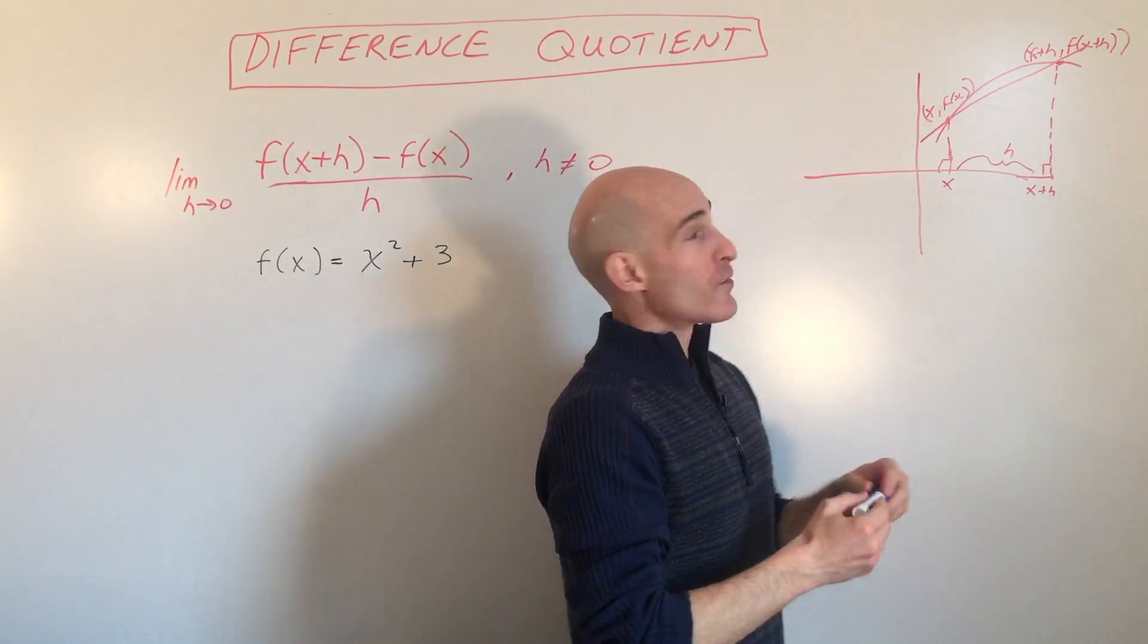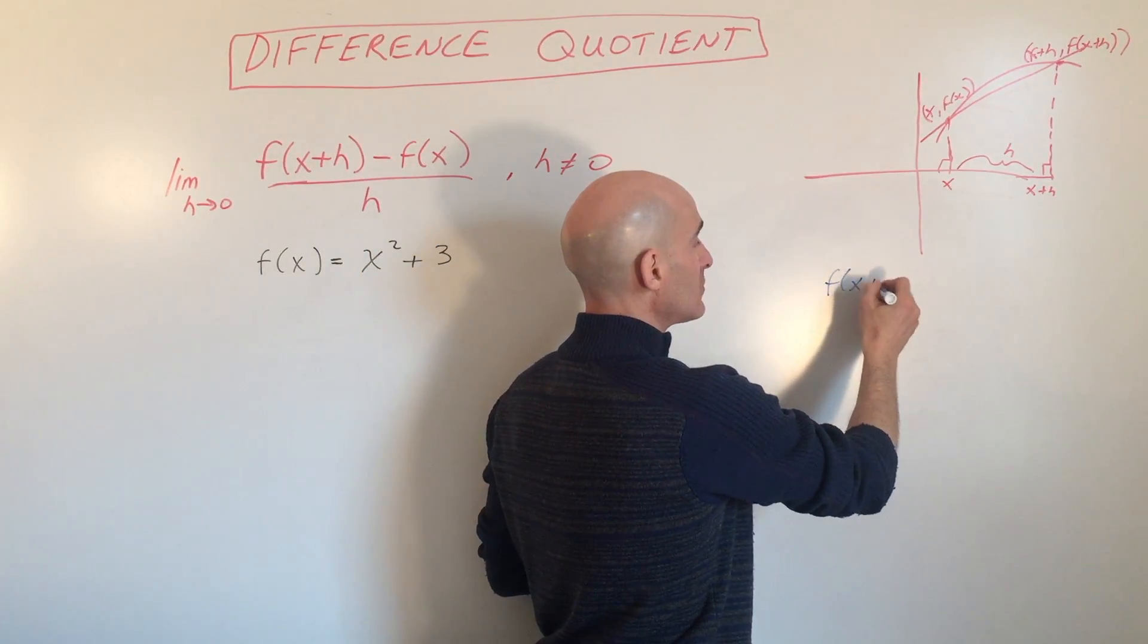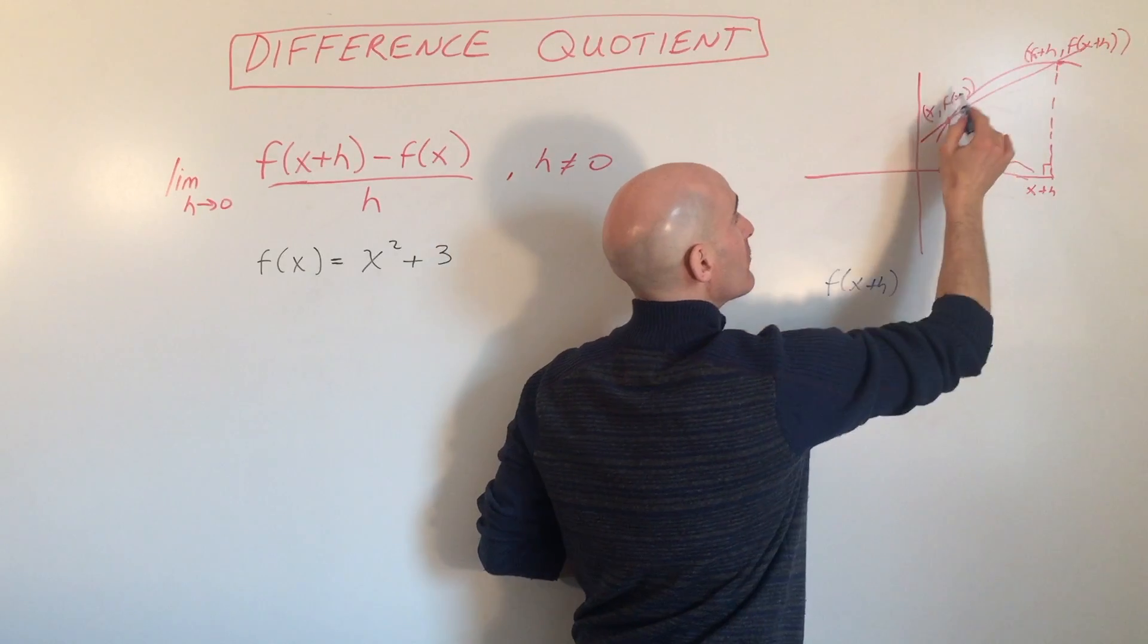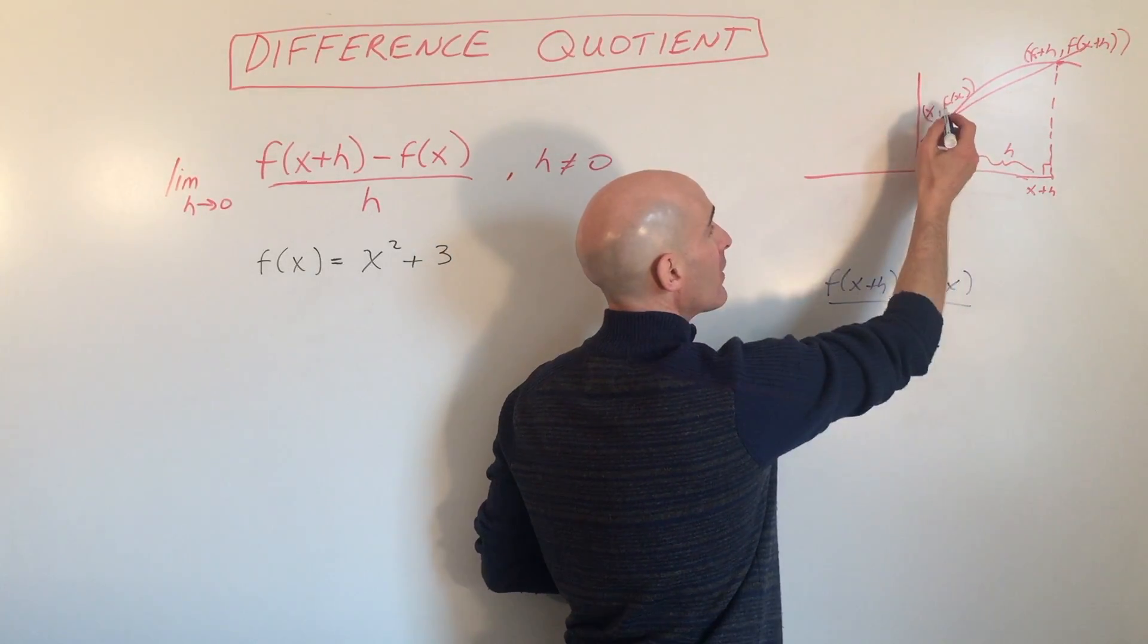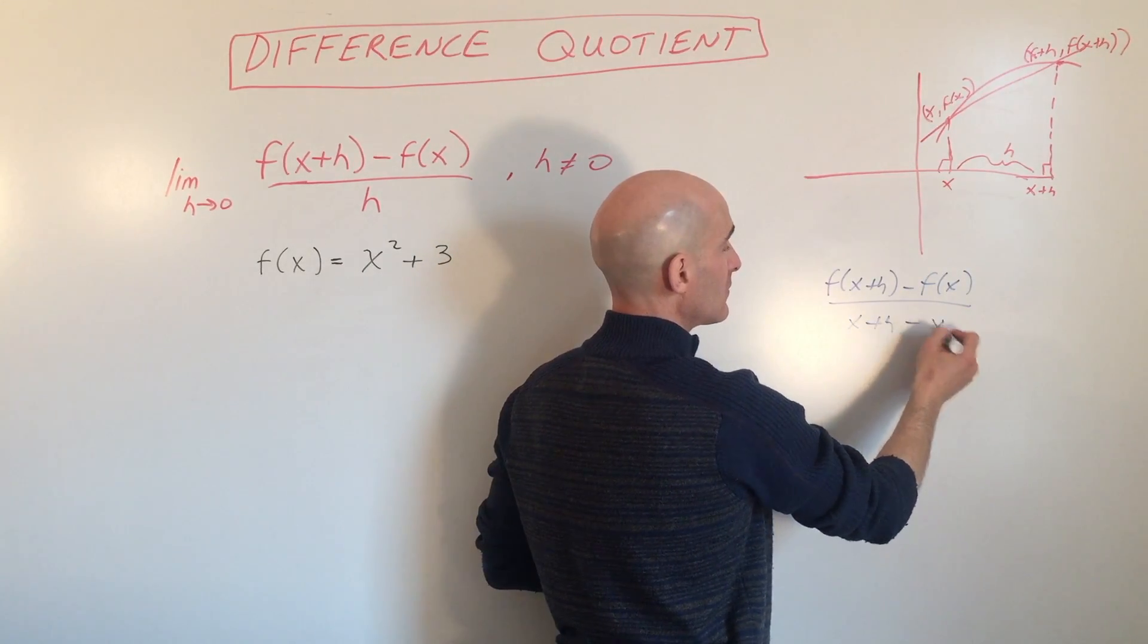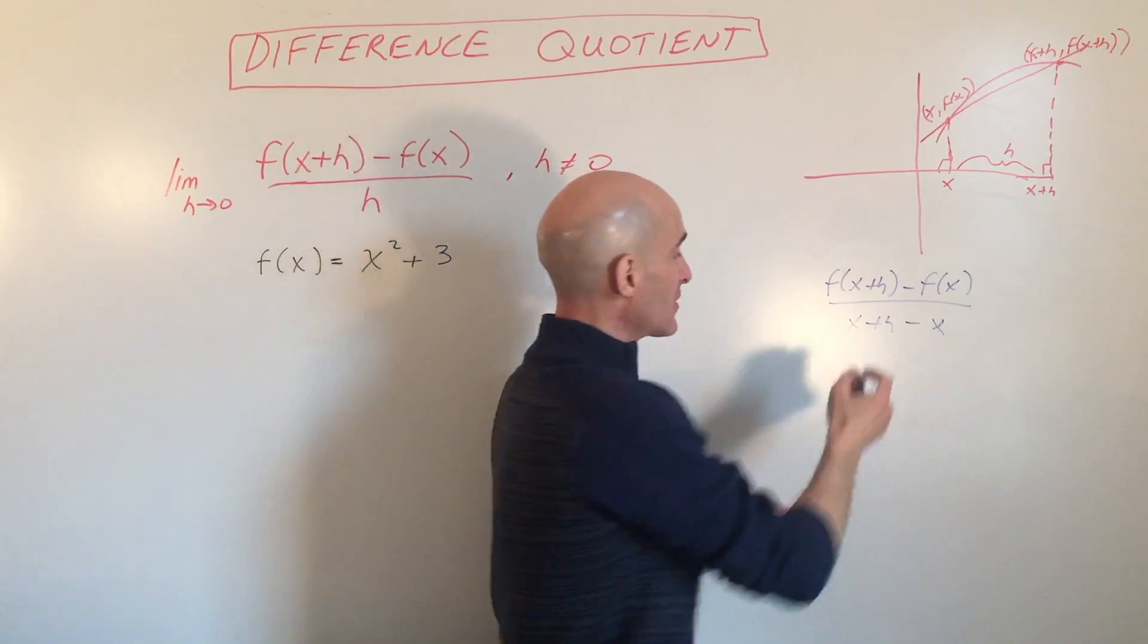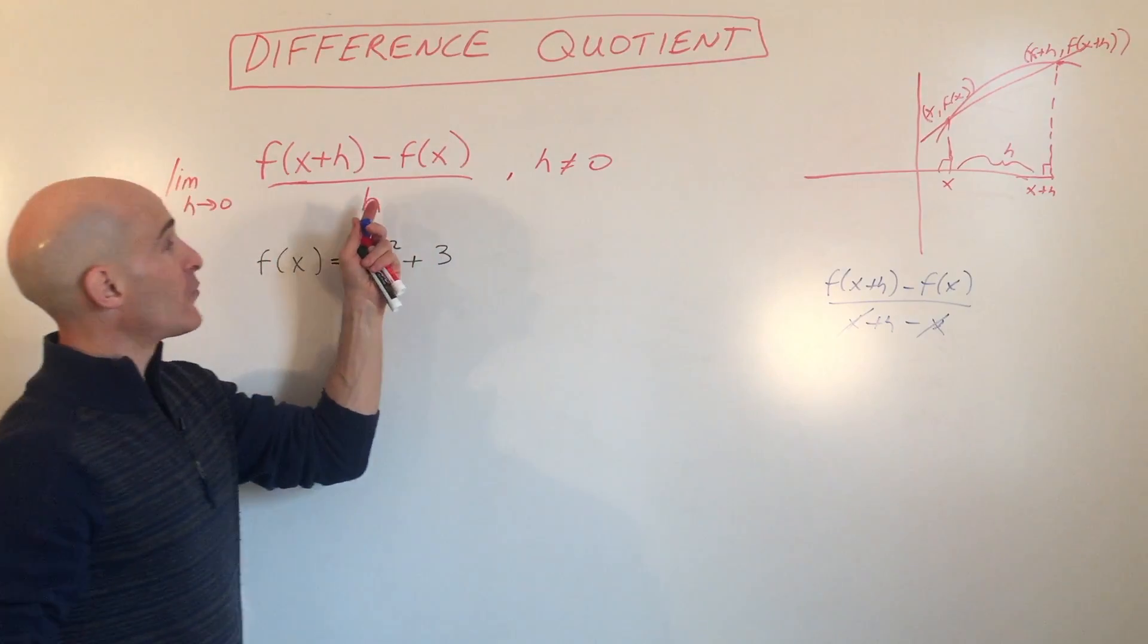Now if we use our slope formula, it's y2 minus y1 over x2 minus x1. Here you can see the x's are going to cancel one another out. That's where this difference quotient comes from.